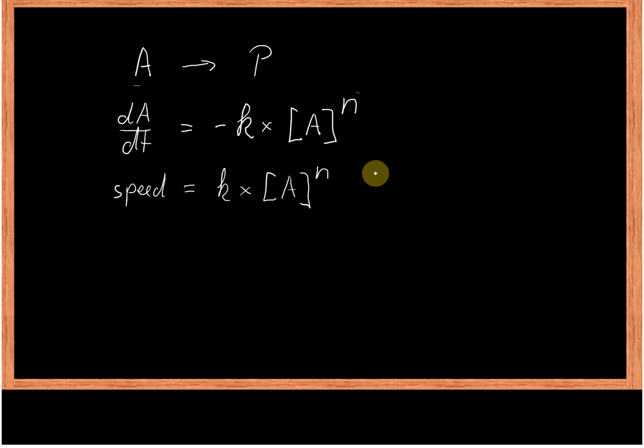Now if we want to get n, what we can do is we can take the log of both sides, so we can use log 10 or we can use any other log as long as we are consistent. And what we can do is we can say log speed equals, now we take the log of the k, log k plus n times log A, log concentration A. So that's just the rules of a logarithm that the times sign will turn into a plus and the power of will turn into a times sign.